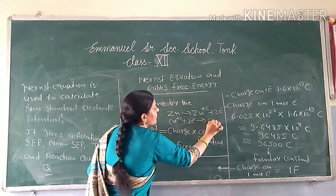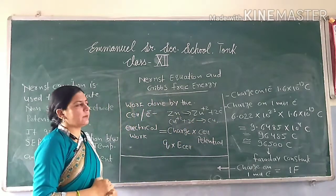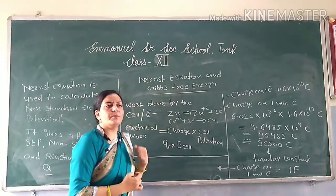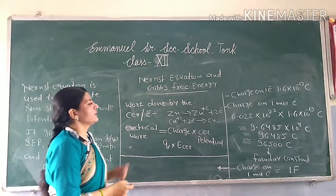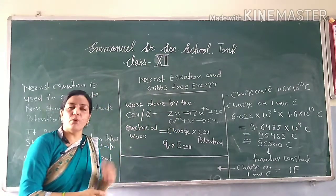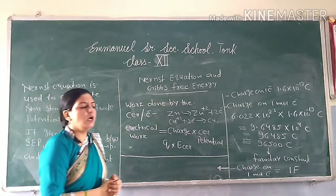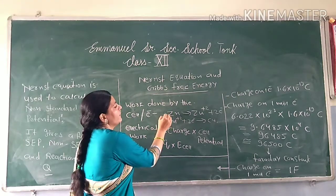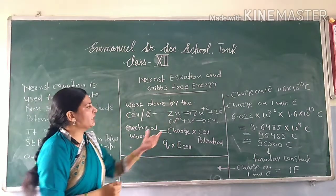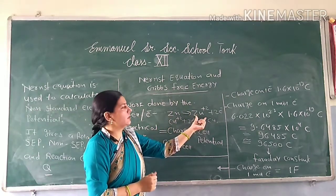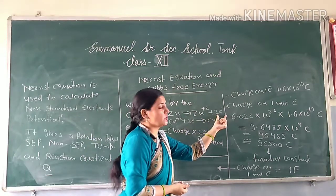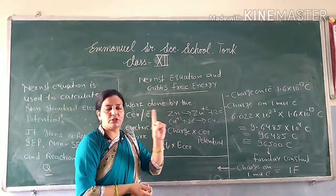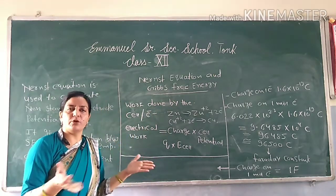We have seen that zinc has made Zn²⁺ — two electrons are lost here. So when we talk about chemical reactions, we don't talk about one atom, we talk about the mole. In chemistry, we represent the amount in moles. So zinc is not written as one atom here, but one mole of atoms. Zinc has one mole, and the two electrons are two moles of electrons.